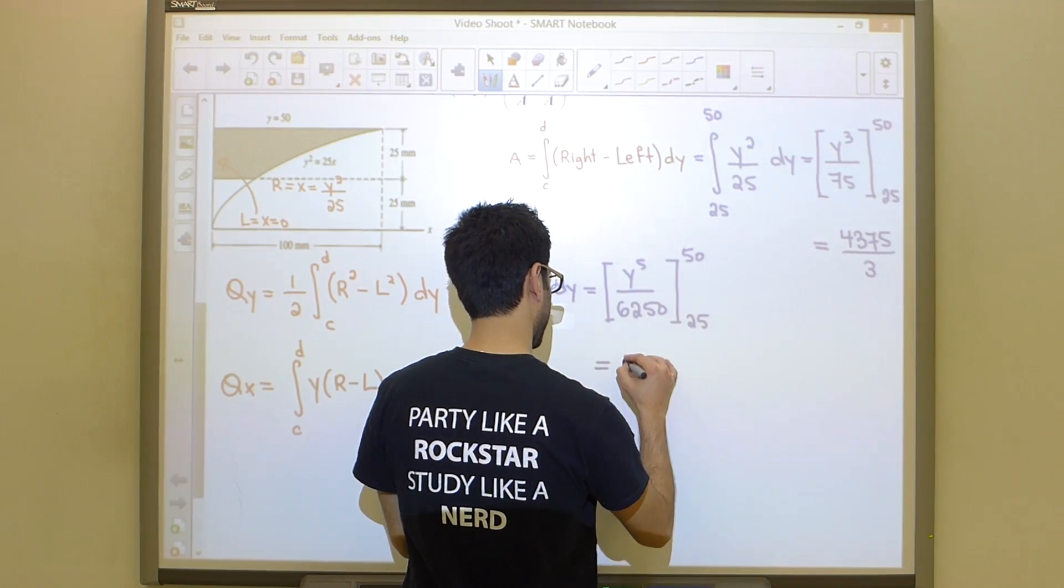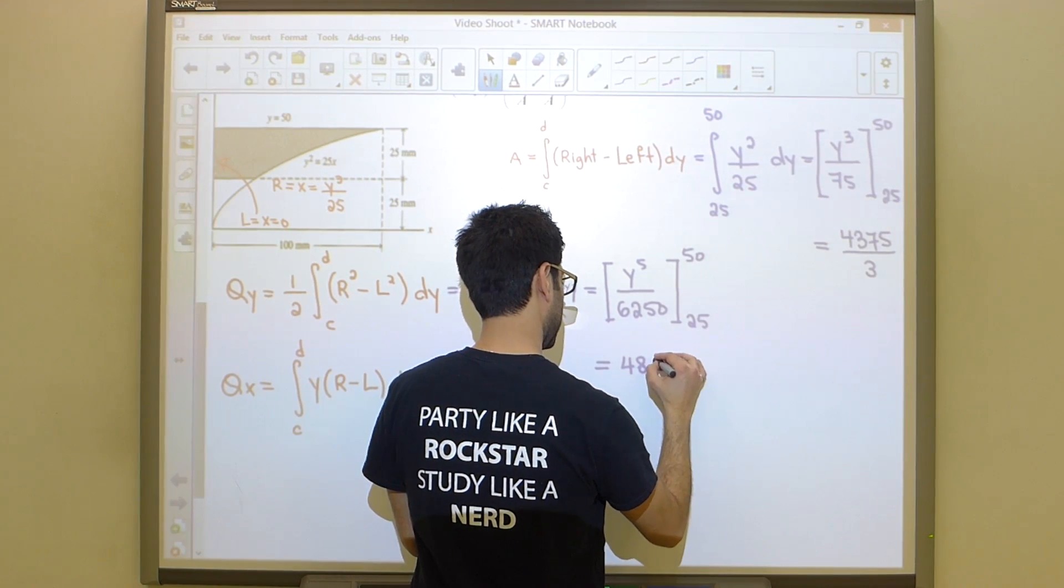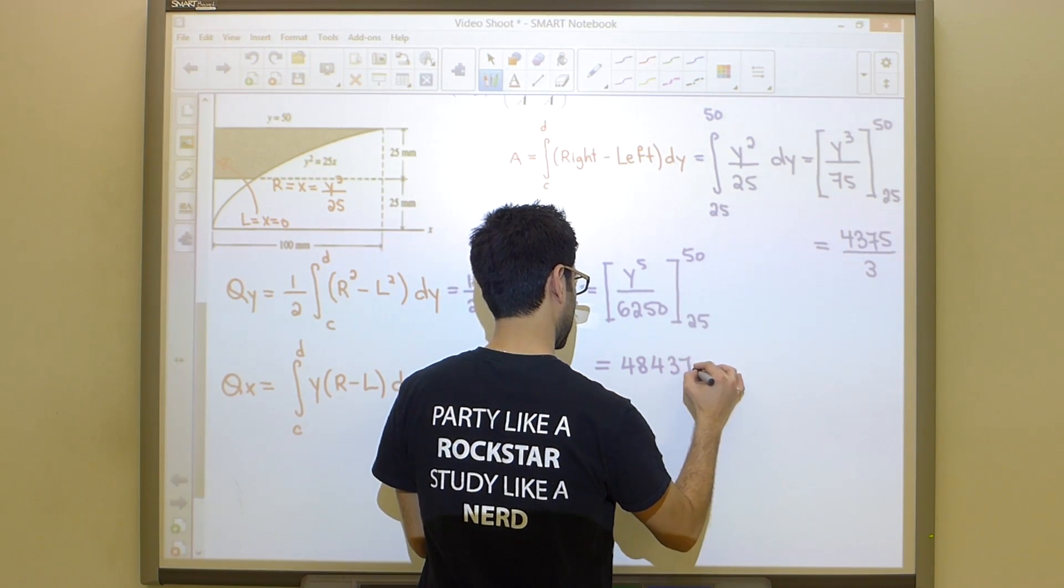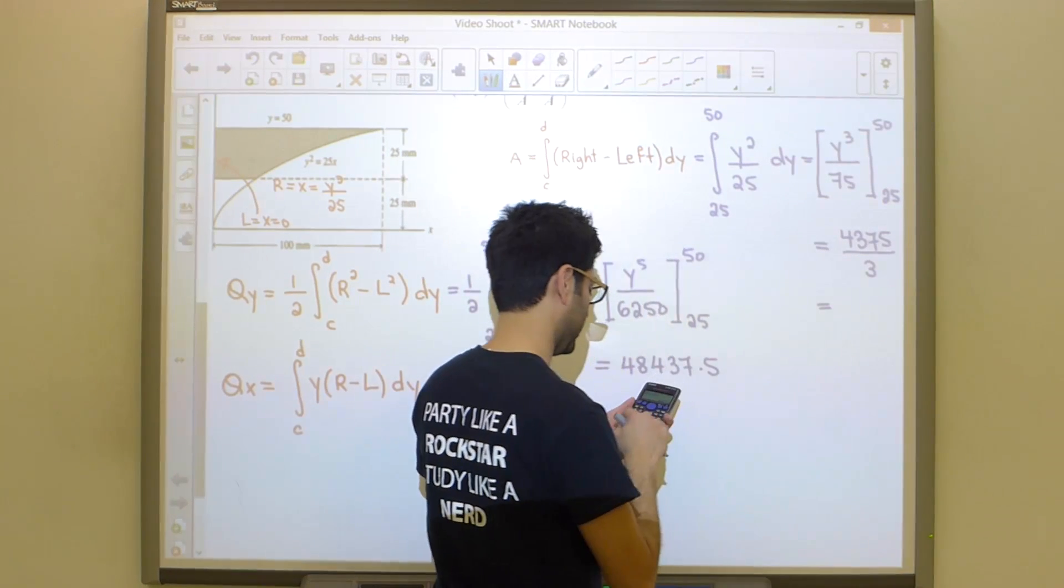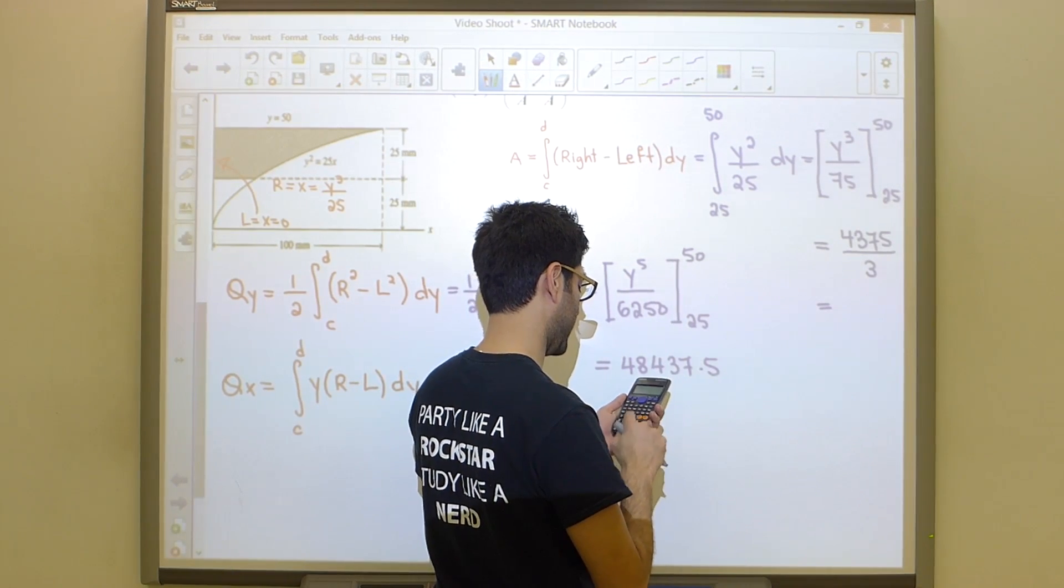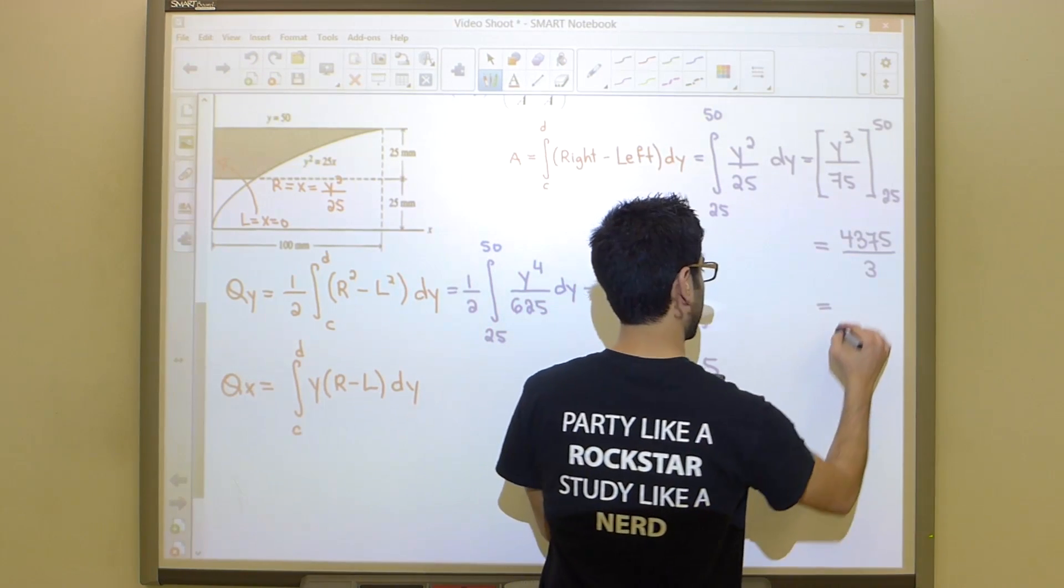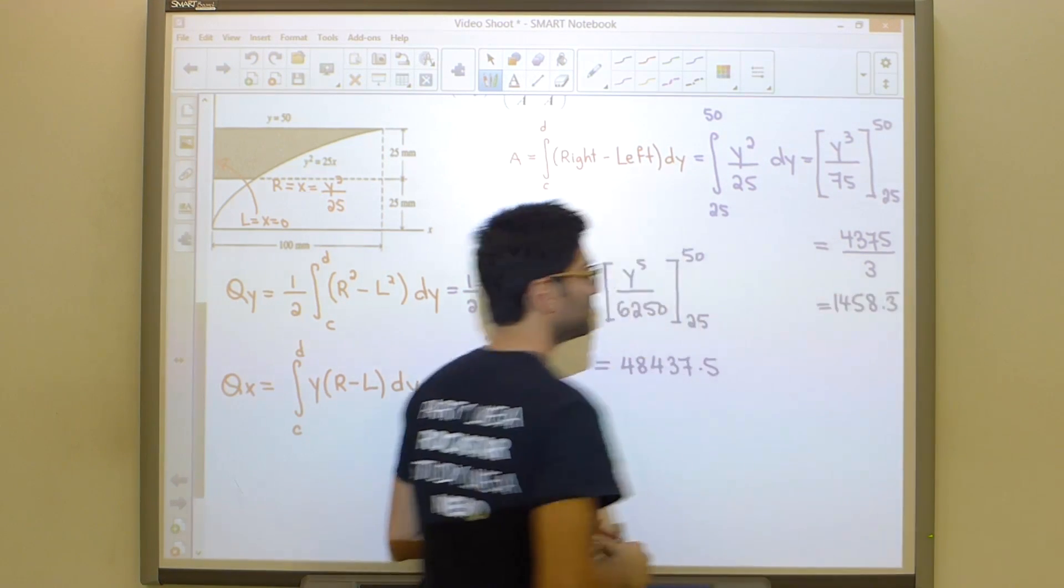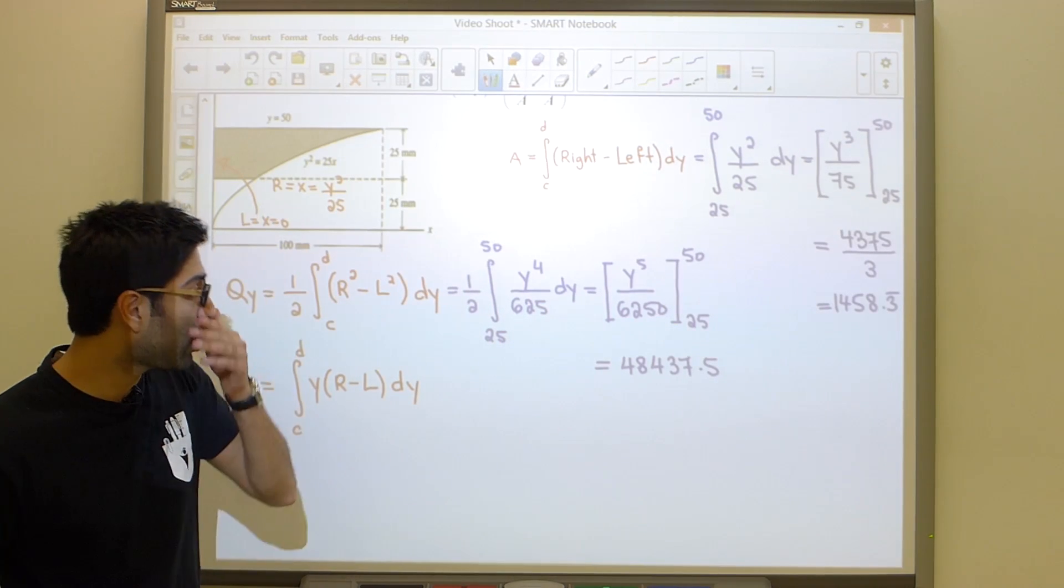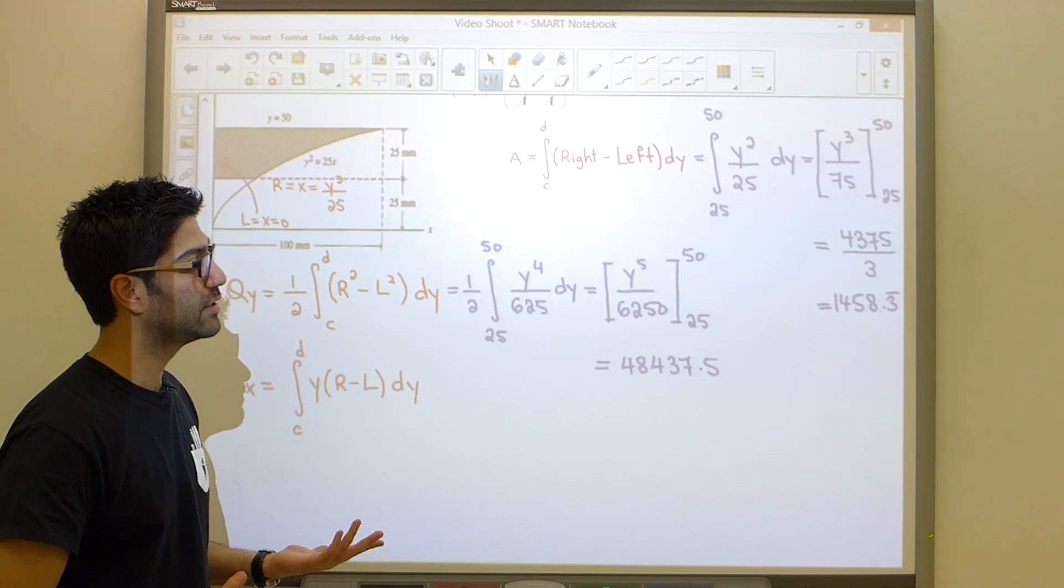So it's a pretty big value. 48437.5. Since we're using decimals, I might as well convert him as well. 4375 divided by 3 is going to give me 1458.3 repeating. And this is it. This is what we need to calculate x bar.